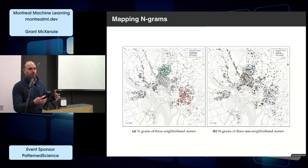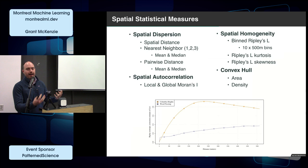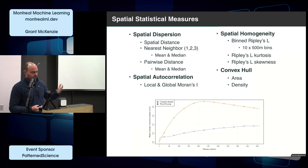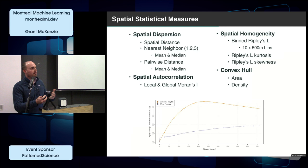From a spatial statistics perspective, we can throw a ton of spatial statistical measures at this data and ask it to identify unique spatial patterns associated with neighborhoods not found in other terms. We use spatial dispersion patterns, nearest neighbor distance, spatial homogeneity, and Ripley's L — shown in the graph below — which tells you at what distance you start to see clustering behavior. The comparison between a neighborhood n-gram in orange and a non-neighborhood n-gram in purple shows they're visually differentiable. We also use spatial autocorrelation and convex hulls to identify what is a neighborhood and what isn't.